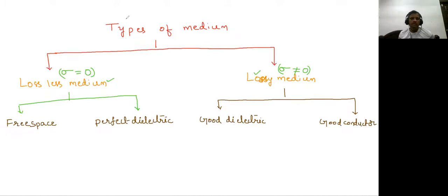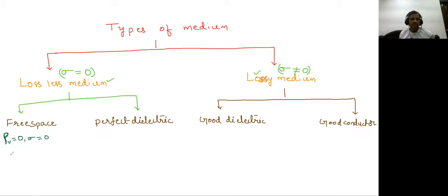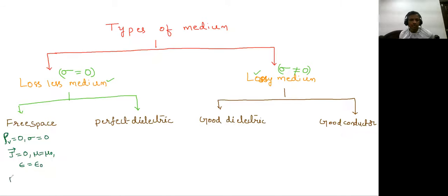For free space, there is no charge, so rho V will be zero. Since sigma is zero, J will also be zero because J equals sigma E. For free space, mu R is one, so mu equals mu naught, and epsilon R is also one, so epsilon equals epsilon naught. These are the specifications of free space.